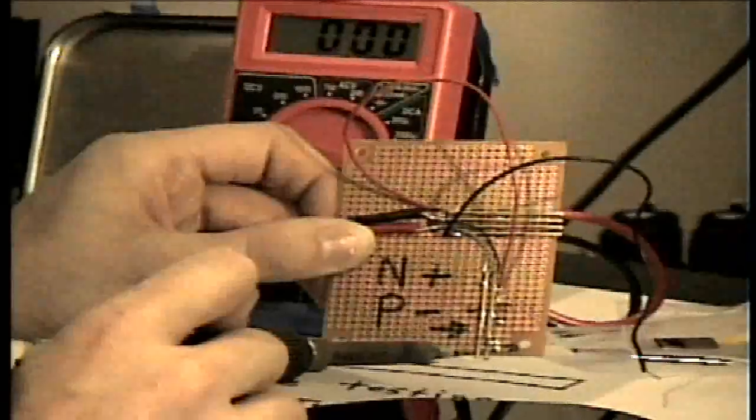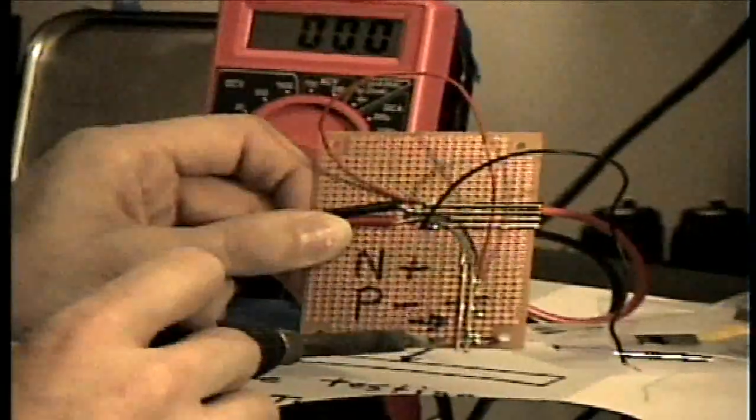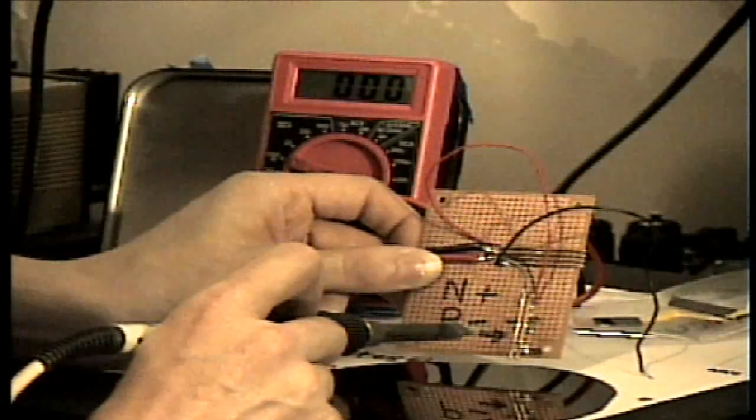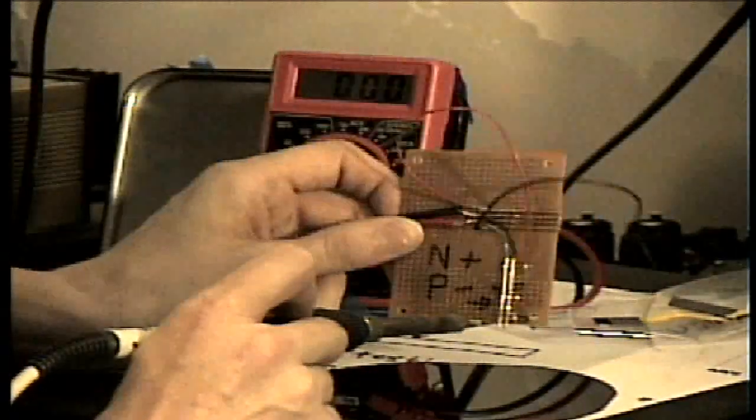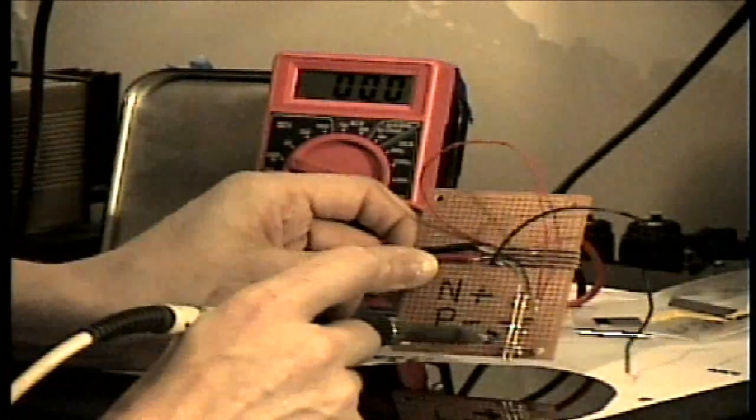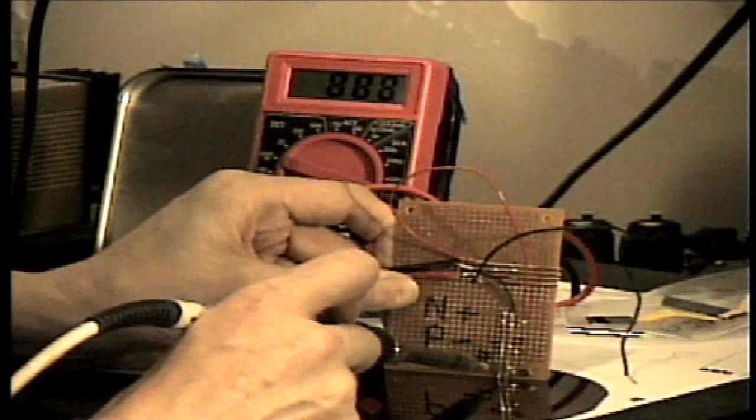What I have here is two spring-loaded pins and a soldering iron. I'm going to heat one of the pins and push it against the wafer, and we should see that this is a P-type wafer, so the meter should indicate negative voltage when I push it against the wafer.